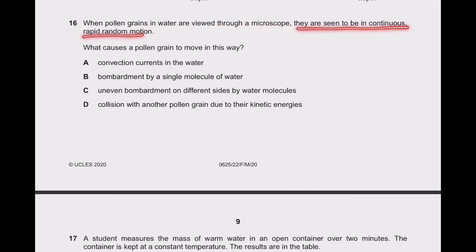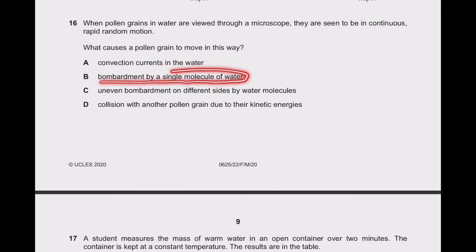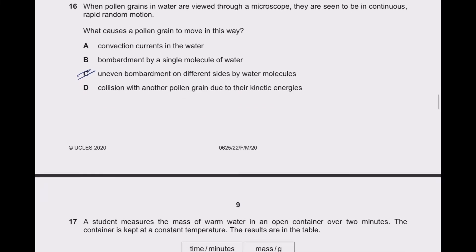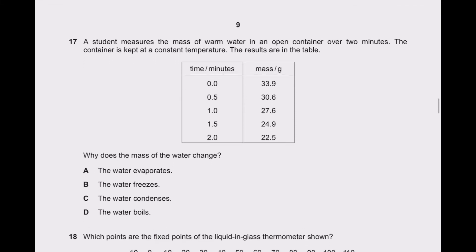Question 16: when pollen grains in water are viewed through a microscope they are seen to be in continuous rapid random motion. What causes a pollen grain to move this way? It is not convection current — no heat is provided. Not bombardment by a single molecule. The correct answer is uneven bombardment on different sides by water molecules — option C.